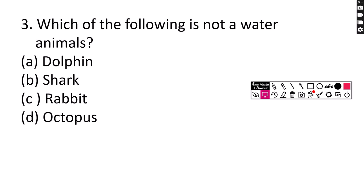Number 3. Which of the following is not a water animal? A. Dolphin, B. Shark, C. Rabbit, D. Octopus. Correct answer is option C, Rabbit.